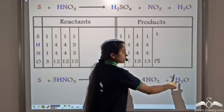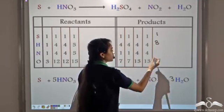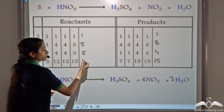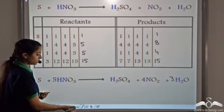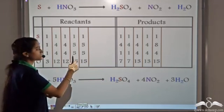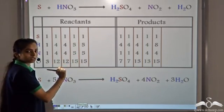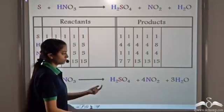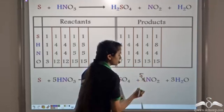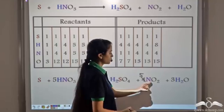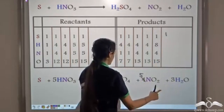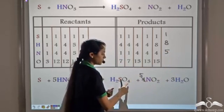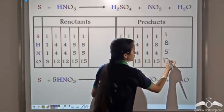With 3 water molecules, the product side has 1 sulfur, 8 hydrogen, 4 nitrogen, and 15 oxygen. Oxygen is now balanced, but hydrogen and nitrogen are not. To balance nitrogen: 5 atoms on the reactant side and 4 on the product side, so we take 5 molecules of nitrogen dioxide. This gives 1 sulfur, 8 hydrogen, 5 nitrogen, and 5 times 2 plus 4 plus 3 equals 17 oxygen atoms on the product side.